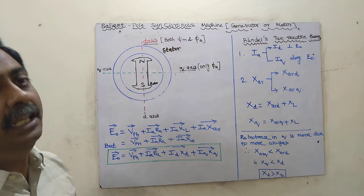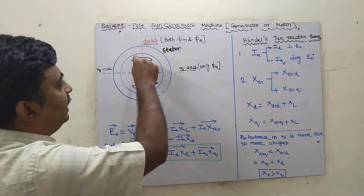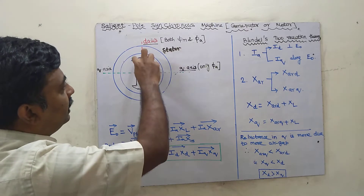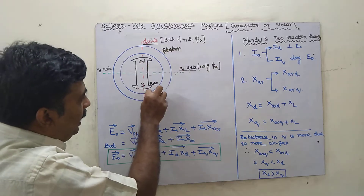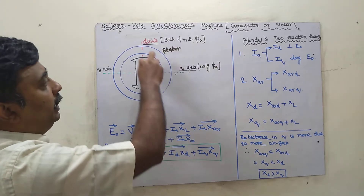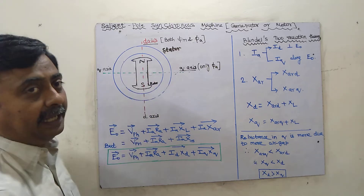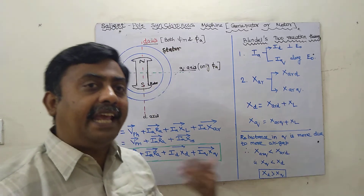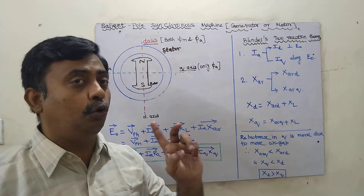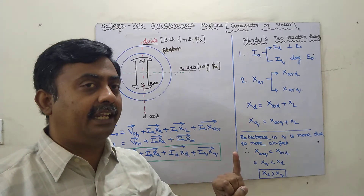In the non-salient pole machine, the air gap is uniform. Whereas in the salient pole synchronous machine, the air gap won't be uniform — along the poles, the air gap will be minimum, but perpendicular to the poles, the air gap is maximum. Due to this non-uniform air gap, the reactance also changes.